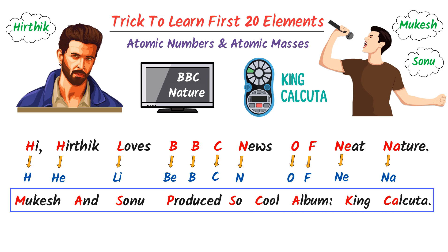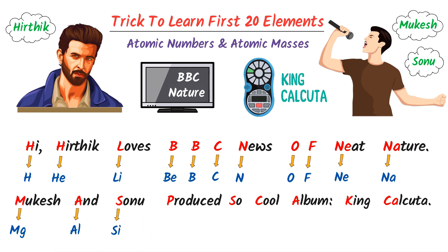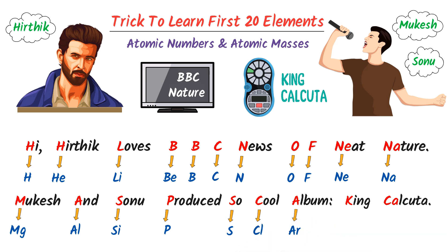Mukesh and Sonu produced So Cool Album King Calcutta. Here, M stands for Mg (Magnesium), A stands for Al (Aluminium), S stands for Si (Silicon), P stands for P (Phosphorus), S stands for S (Sulphur), C stands for Cl (Chlorine), A stands for Ar (Argon), and K stands for K (Potassium).